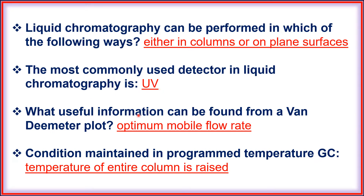What useful information can be found from a van Deemter plot? That is the optimum mobile phase flow rate. The condition maintained in programmed temperature gas chromatography is that the temperature of the entire column is raised.